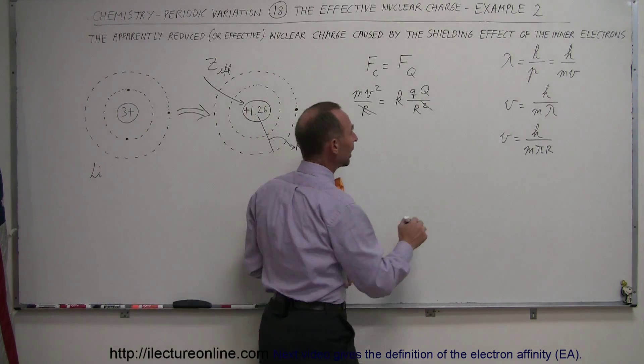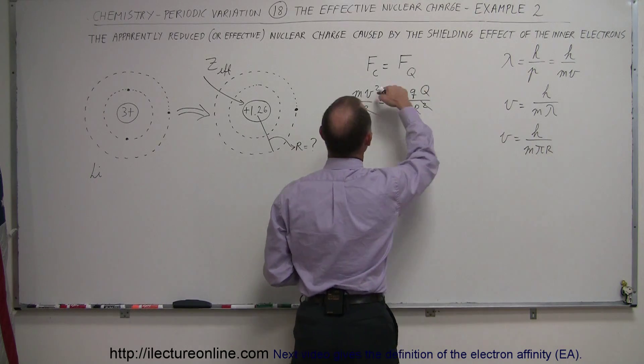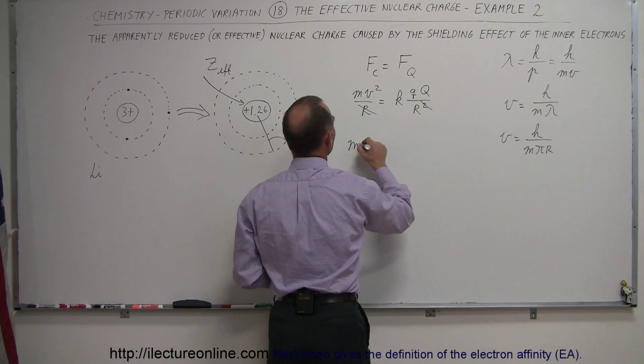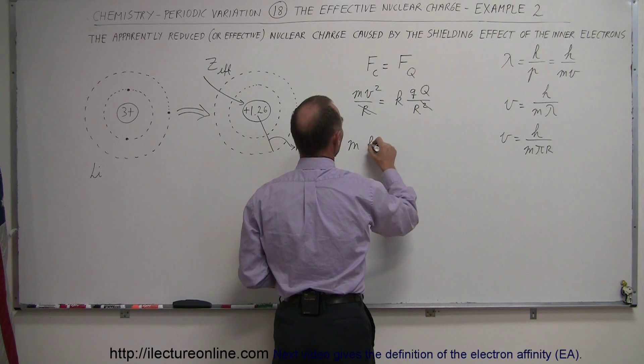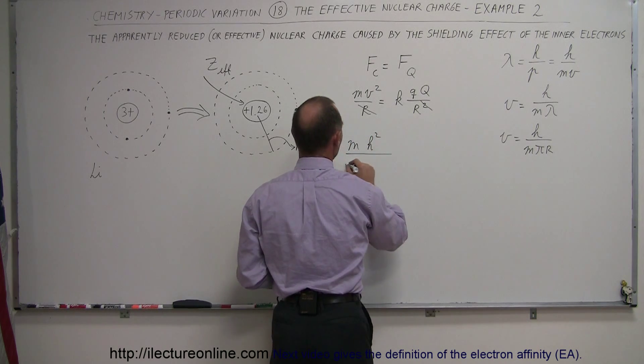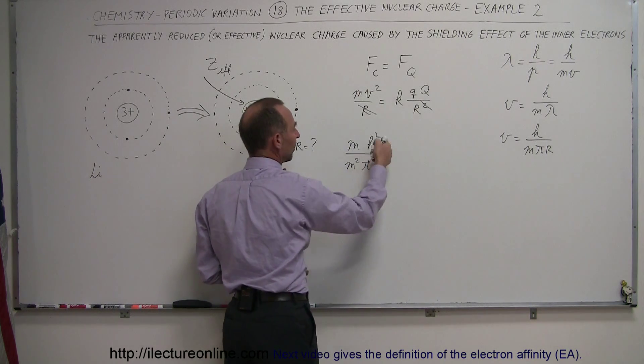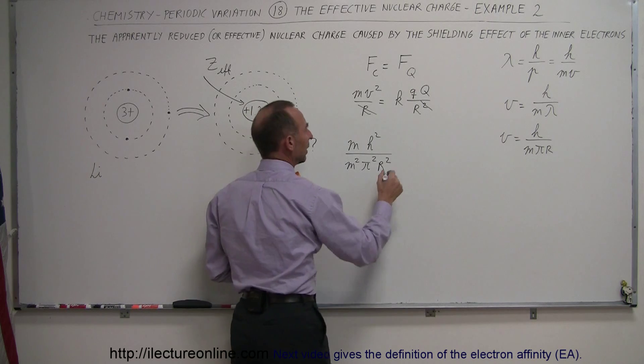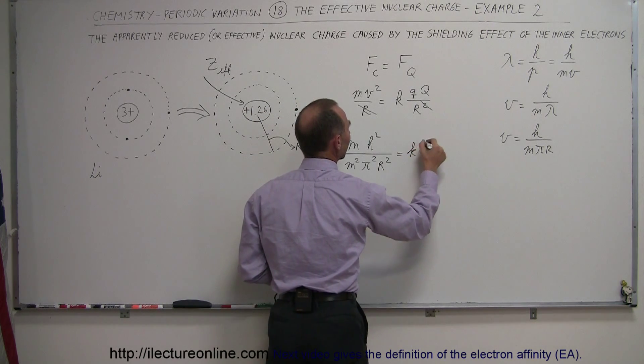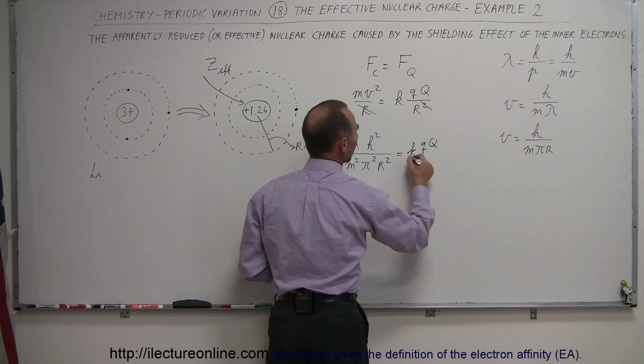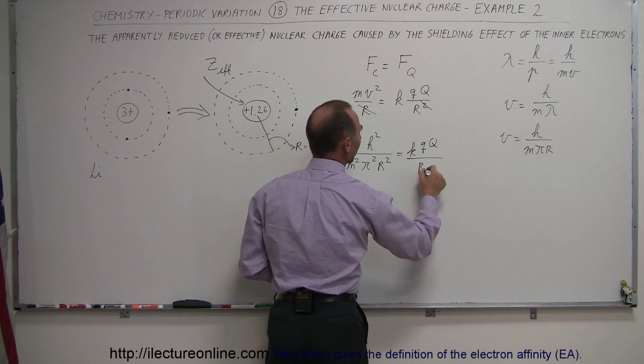I can now replace v by this quantity and plug it in here. So we have m times v squared, which is h squared divided by m squared pi squared times r squared. So I simply replace v squared by this quantity right there, and that's equal to k times the charge of the electron times the charge of the center, the nucleus, divided by r.